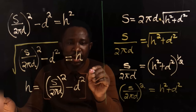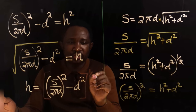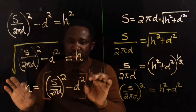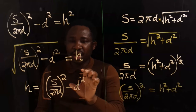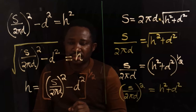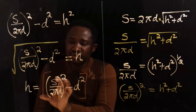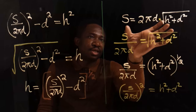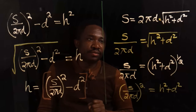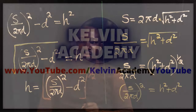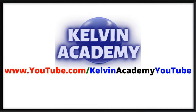We can also write this as h equals s over 2πd, all to the power of 1 over 2, which is the same form. We have succeeded — that's our answer. We have made h the subject in this equation.